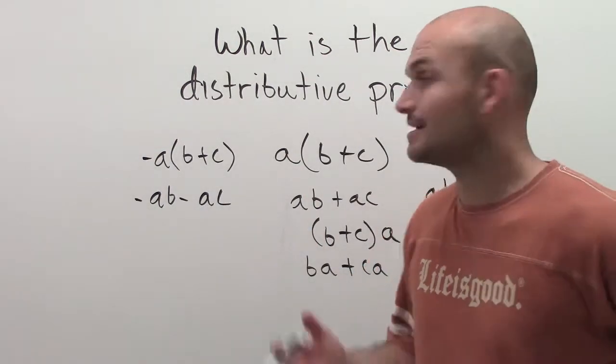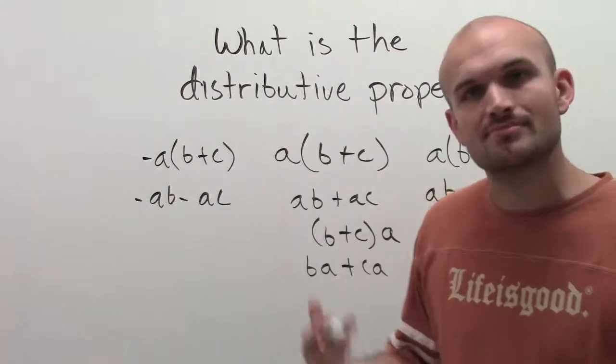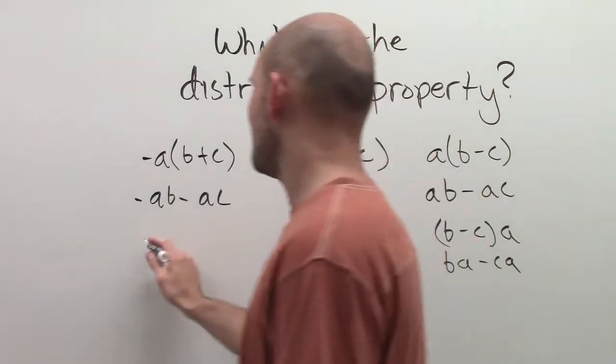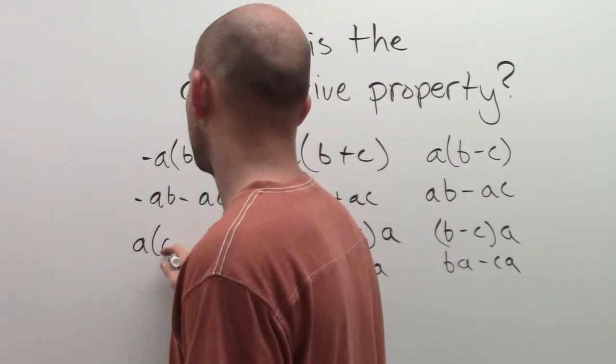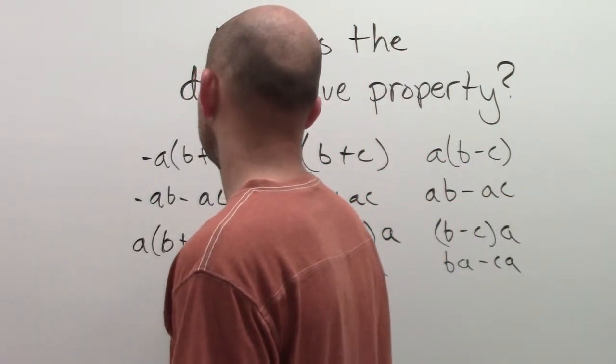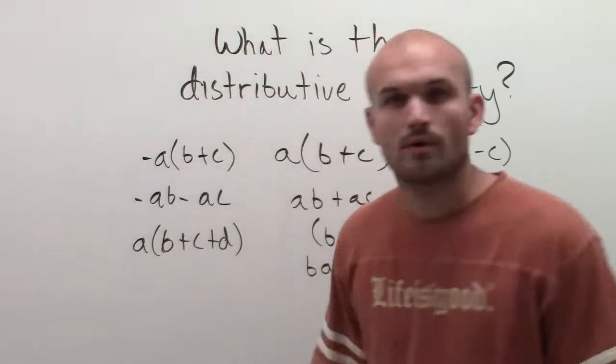And the last thing is students say, alright, I got two terms, that makes sense. But then what happens if I have something like this, b plus c plus d? They're like, well, then what do I do then?